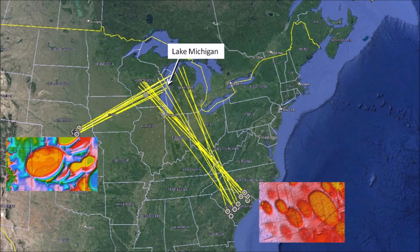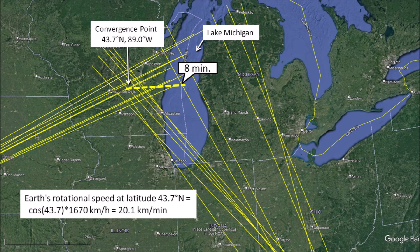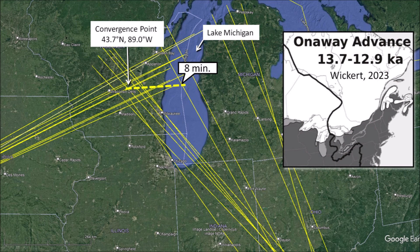The discovery of the Nebraska basins made it possible to triangulate a convergence point by the Great Lakes. Ballistic flights from that location would have required approximately 8 minutes. The Earth rotates eastward 0.25 degrees of arc for every minute of flight time, so the point of origin needs to be adjusted eastward by about 20 kilometers per minute. A flight time of 8 minutes would have placed the origin of the projectiles in the middle of Lake Michigan, which according to Wickert 2023 was covered with ice as late as 12,900 years ago. A comet fragment impact at this location would have ejected pieces of glacier ice in ballistic trajectories forming the Nebraska basins and Carolina Bays.